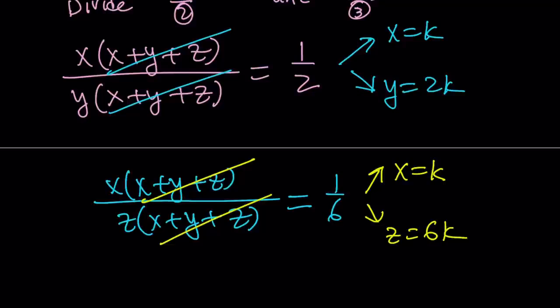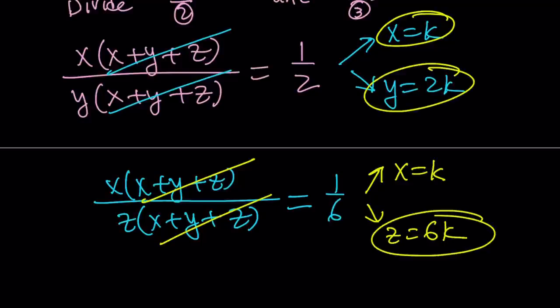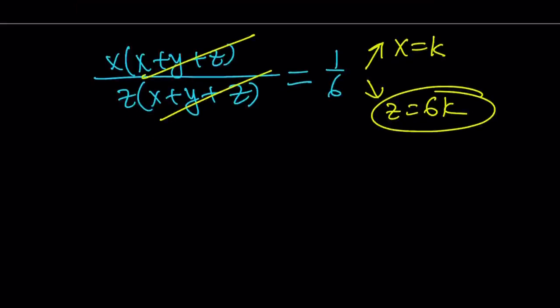So you always have to check for that. If you don't get the same thing, then you can adjust your variables, ratios, so on and so forth. So we get x equals k, y equals 2k, and z equals 6k. What can I do with this? Well, I have three equations. Let's use the first one. Use number one.